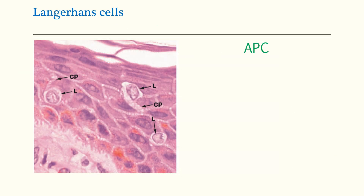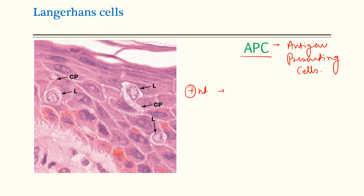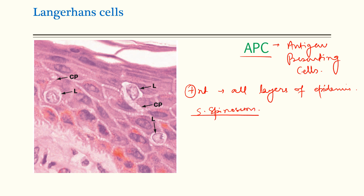Moving on, we have Langerhans cells. What are Langerhans cells? These are the antigen presenting cells. They are present in all the layers of the epidermis, but are clearly appreciated in stratum spinosum. You can see the Langerhans cells with their cytoplasmic processes. The cells have irregular nuclei with clear cytoplasm.